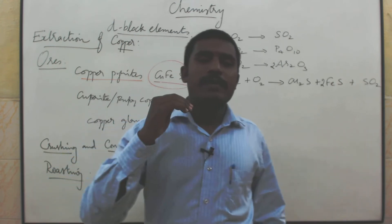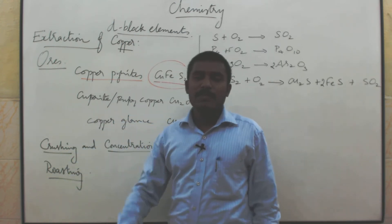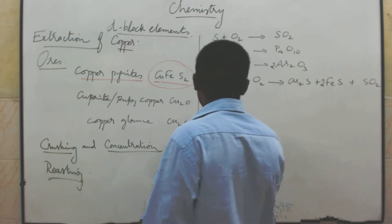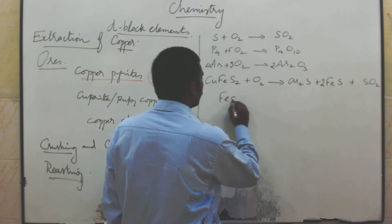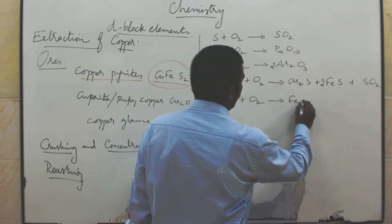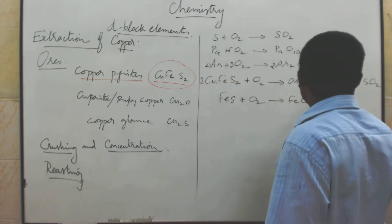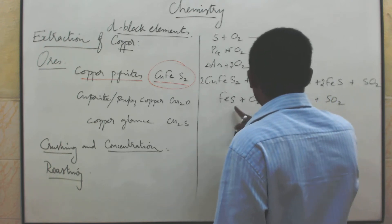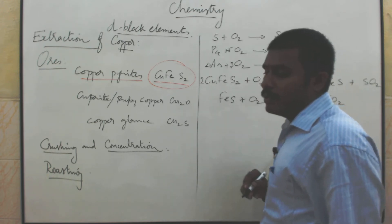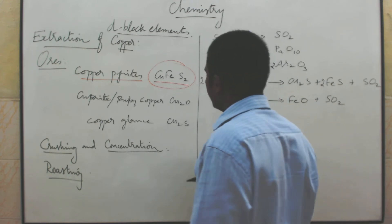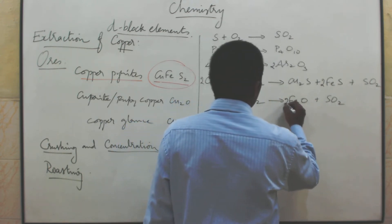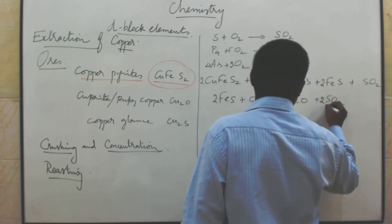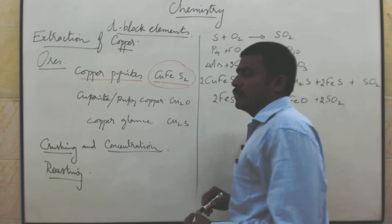During roasting, copper pyrite becomes its respective sulphides — copper sulphide and iron sulphide. Then iron sulphide reacts with air to become iron oxide (FeO) plus sulphur dioxide. To balance: 2 iron, 2 iron; 1 sulphur, 1 sulphur; 3 oxygen but only 2 oxygen available, so multiply: 2 gives 2 sulphur and 6 oxygen — balanced.